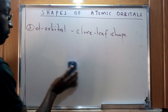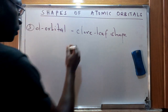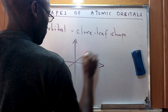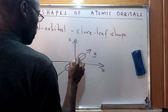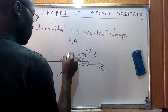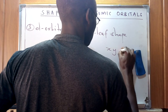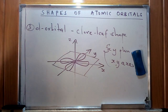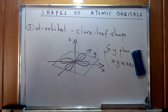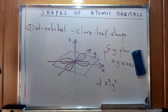We can illustrate the d orbitals using specific shapes along the xyz axes. If we have an orbital lying along the x-y plane and the xy axis, this orbital is referred to as the d-xy orbital. Other d orbital illustrations follow similarly from this.